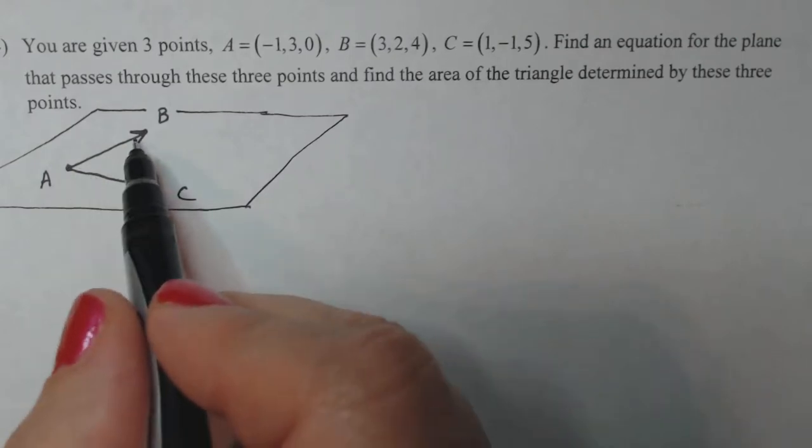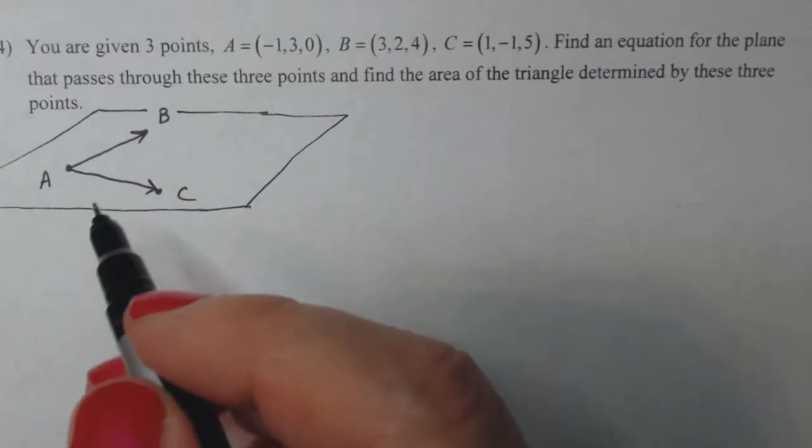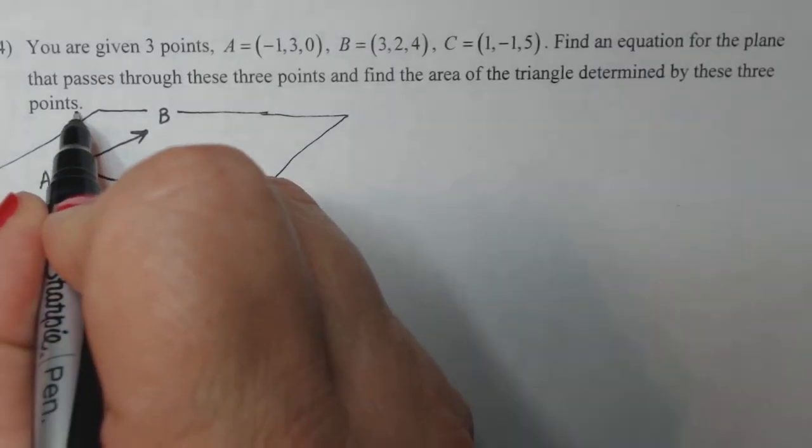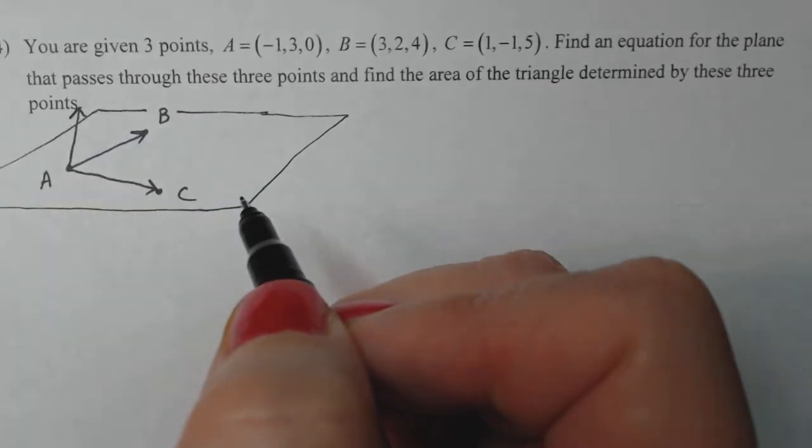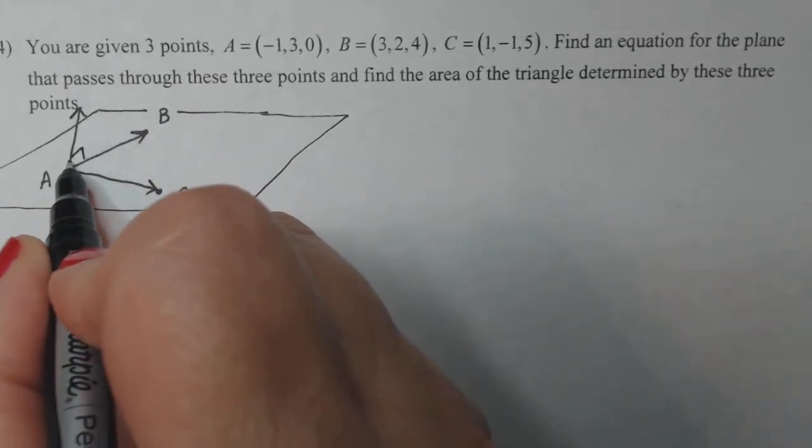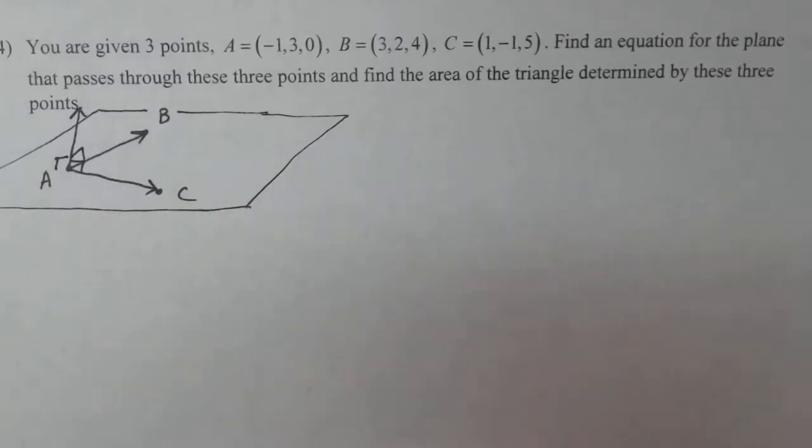If I can find that vector there and that vector there and I cross them, then I will get a vector perpendicular to both and hence also perpendicular to the plane. That's what we're looking for.